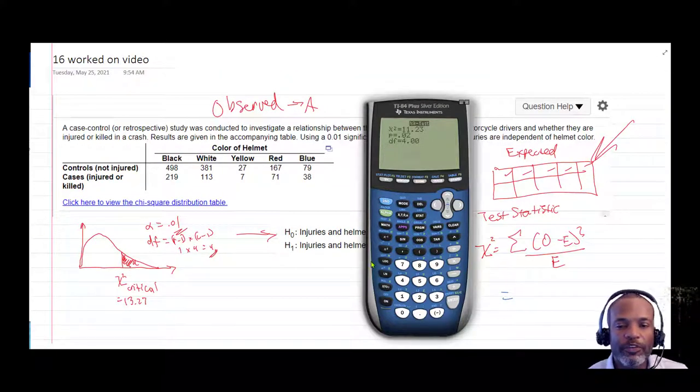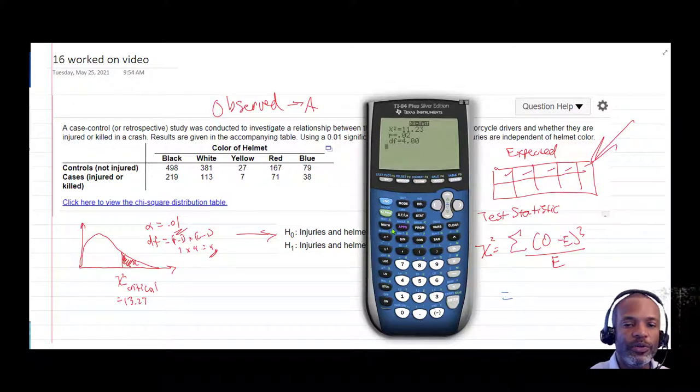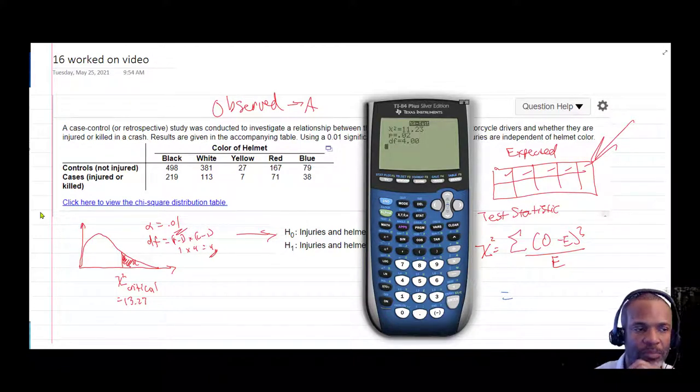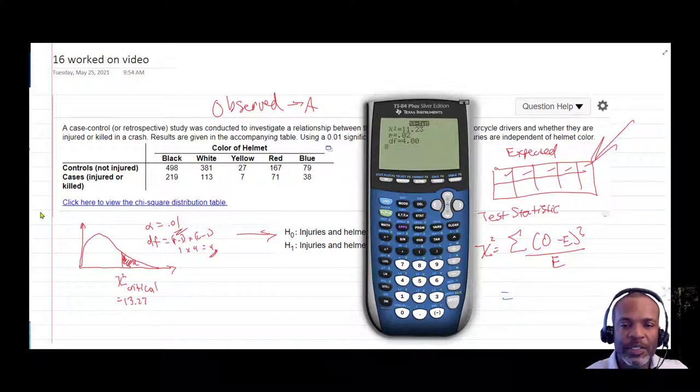And we get 11.23. So we have 11.23, and that value, 11.23, and P equals 0.02.